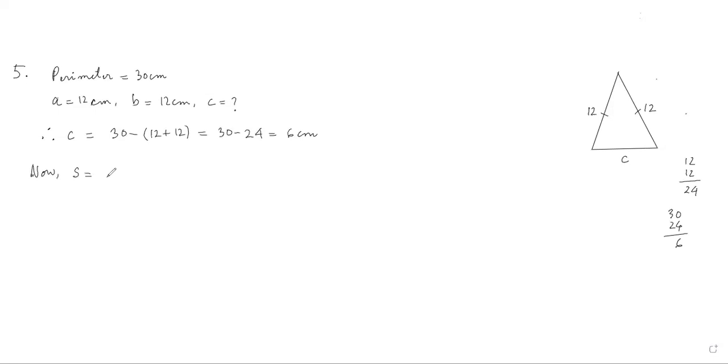S equals A plus B plus C by 2. Perimeter by 2. Perimeter 30 by 2, and we can divide to get 15.